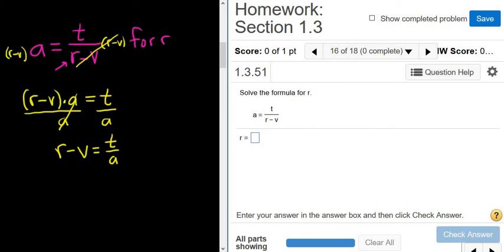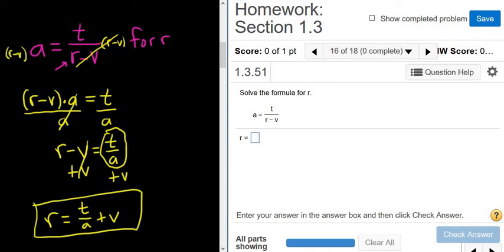And now you're pretty much set. All you have to do is add v to both sides, and we get r equals, and then we have this whole piece here, t over a, and then plus v that's on the outside. And that is the final answer. Hope that made sense.